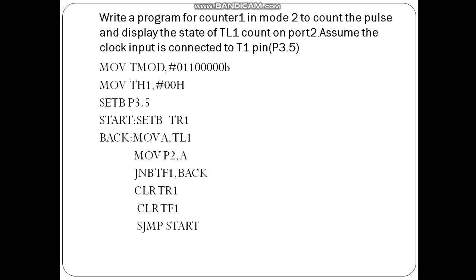In this particular program, you are asked to make counter 1 work in mode 2 to count pulses and display the state of TL1 count on port 2. Assume the clock input is connected to port 3 pin 5, that is T1 pin. As we want the counter to work in mode 2, we first load the TMOD register with #0110, indicating counter 1 is used in mode 2 and counter 0 is not used. TH value is 0. Since the clock input is connected to T1 pin (port 3 pin 5), that pin must work in input mode. Hence, we write the instruction SETB port 3 pin 5.